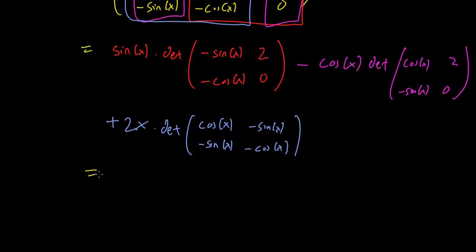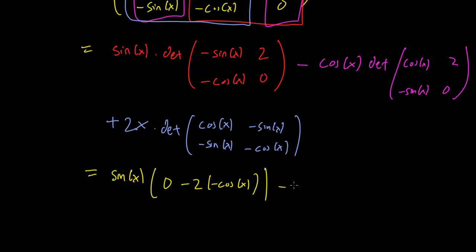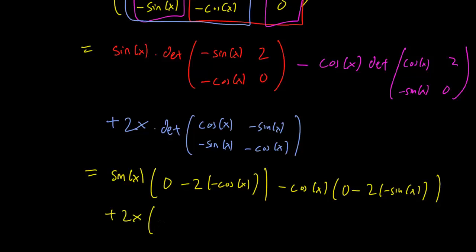Let's calculate what we get. sin x times this determinant gives 0 minus (minus 2 cos x). The second term gives 0 minus (minus 2 sin x) multiplied by minus cos x. The last term is 2x times (cos x squared minus sin x squared), which is cos²x minus sin²x.